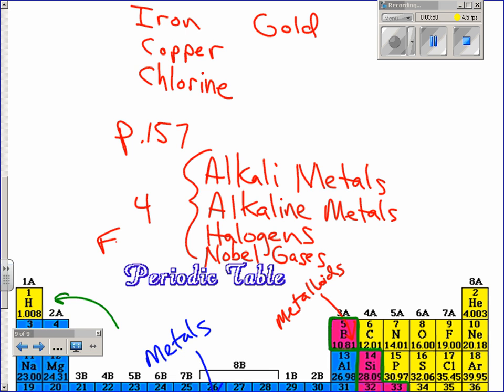Those are four families I would like you to read about and jot at least two things down about each of those families. So, starting on page 157, and it will go on for several pages. They talk about other groups and families in there as well. Alkali metals, alkaline metals, halogens, and noble gases. I would like you to be able to write down at least two things about each of those families.